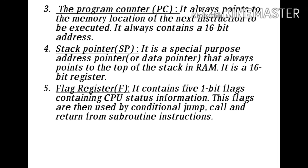The fifth register is the flag register — the most important register which shows the status of the result present in the accumulator. It contains five 1-bit flags with CPU status information. These flags are used by conditional jump, call, and return from subroutine instructions. The flag register shows the status of the final result: whether a carry is generated, whether the result is positive or negative, zero or non-zero, or even or odd.